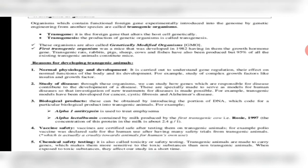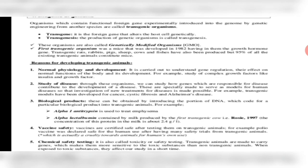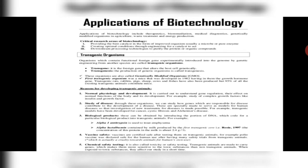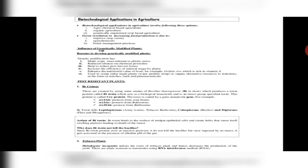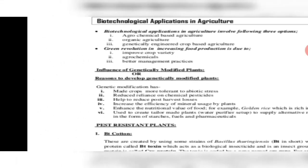Third, biological products formation. For example, alpha-1-antitrypsin to treat emphysema has been produced this way. Alpha-lactalbumin has been produced in Rosie the cow, produced in the year 1997, with a high concentration of alpha-lactalbumin in the milk. Fourth, to check vaccine safety, drug safety, and chemical safety testing — certain cosmetics and drugs can be tested in transgenic organisms.